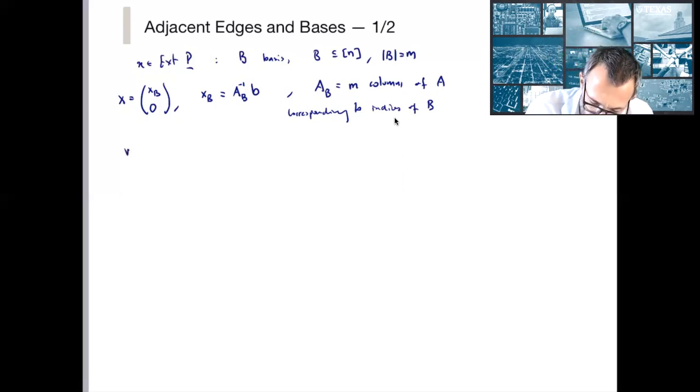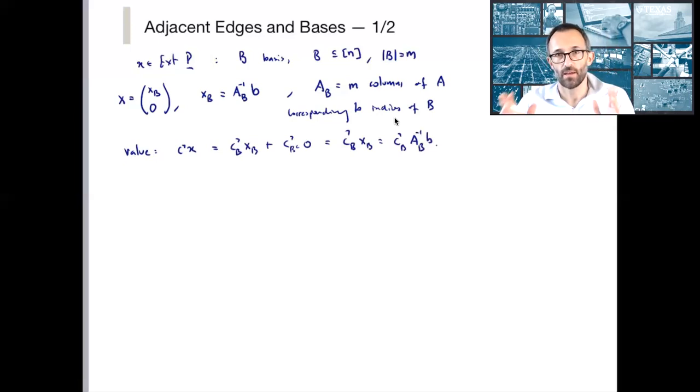So what is the value of this X that I wrote down? It's just C transpose X, which, writing out the coefficients, C has a part that's in the coefficients specified by B and those outside. So this is equal to CB transpose XB plus CB complement transpose XB complement, but we said that's 0. So this is just CB transpose XB. And, in fact, we already know what that is. CB transpose AB inverse times B. So this is the value. Again, I'm belaboring this point, but as soon as we choose a subset of the N indices, we immediately get XB, we get our solution to the optimization problem, and we get its value. These are all continuous objects that are specified by this combinatorial choice.